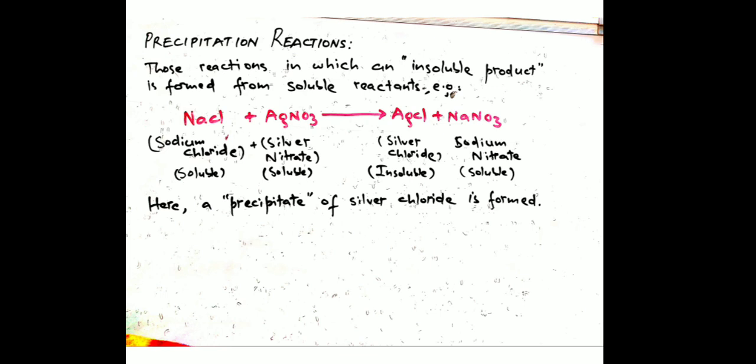Precipitation reaction is a type of double displacement reaction in which an insoluble product is formed. The reactants are soluble but one of the products is insoluble, so we can separate it. For example, sodium chloride reacting with silver nitrate forms silver chloride and sodium nitrate. All substances are soluble except silver chloride, which is insoluble and can be separated. The insoluble compound is called a precipitate and the process is called precipitation.